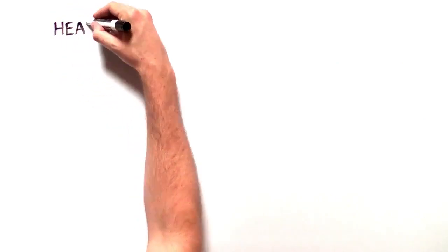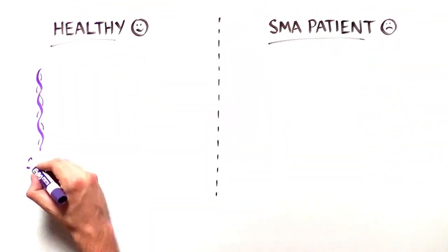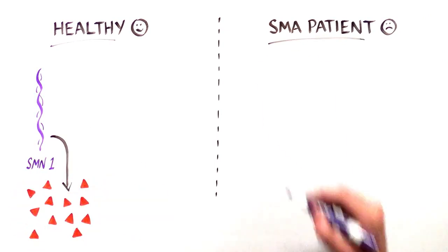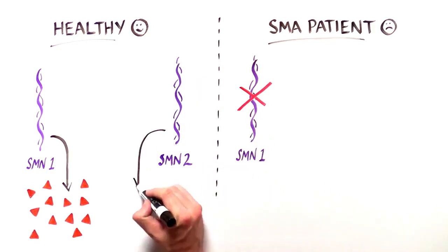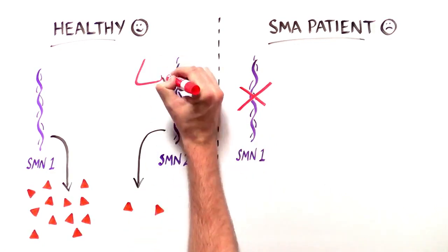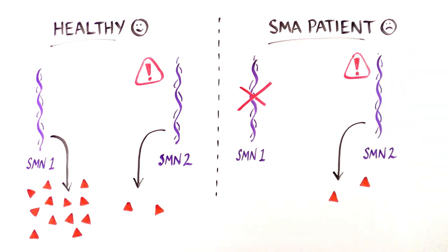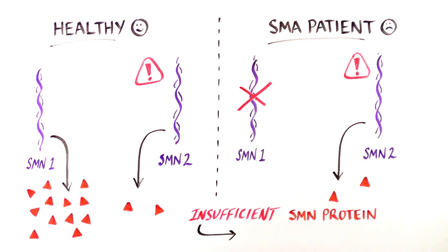The SMN1 gene, which produces the SMN protein, is missing or damaged beyond repair in SMA patients. Humans have a second SMN-producing gene called SMN2, but this gene is a poor backup because it produces very little functional SMN protein. This deficiency stems from a mistake during RNA editing.